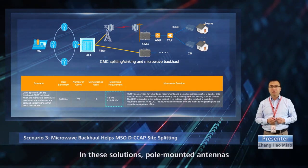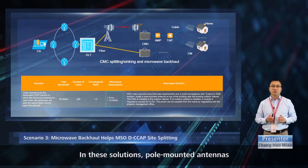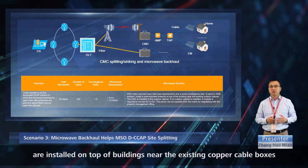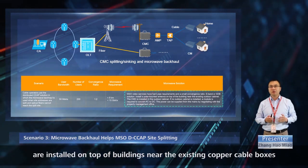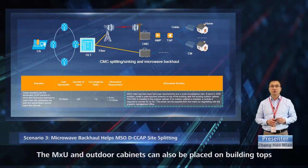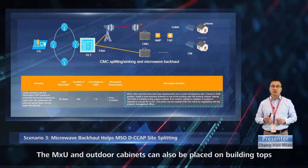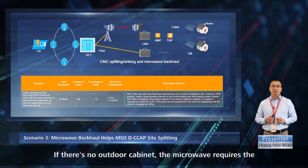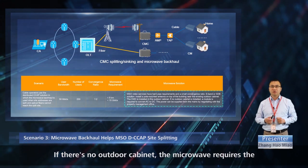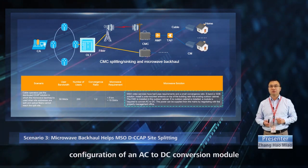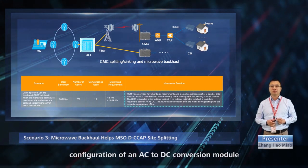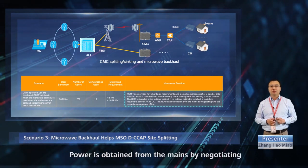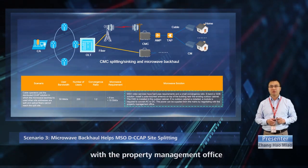In these solutions, pole-mounted antennas are installed on top of buildings near the existing copper cable boxes. The MXU and outdoor cabinets can also be placed on building tops. If there's no outdoor cabinet, the microwave requires the configuration of an AC to DC conversion module. Power is obtained from the mains by negotiating with the property management office.